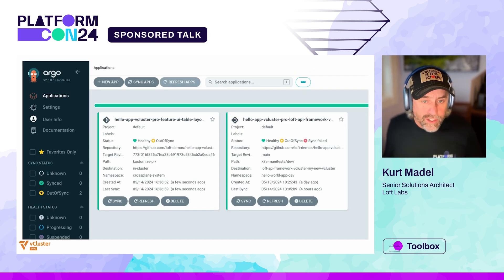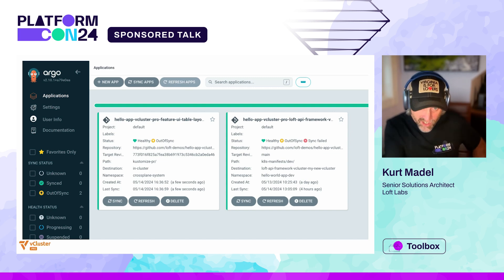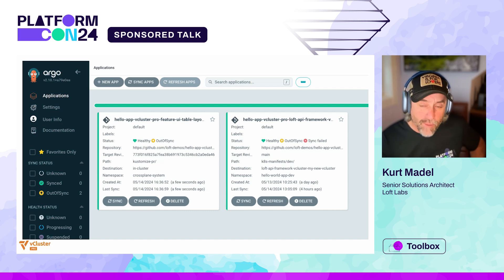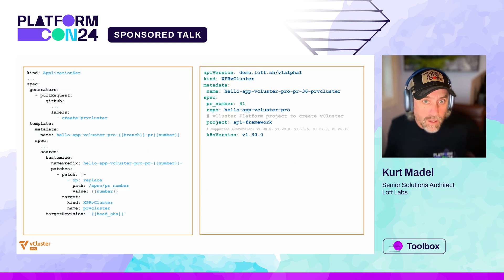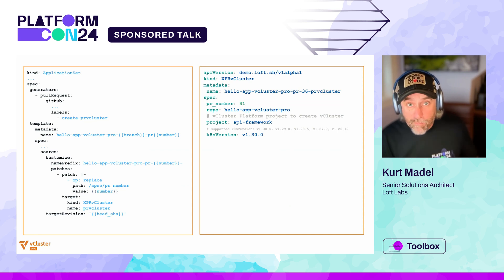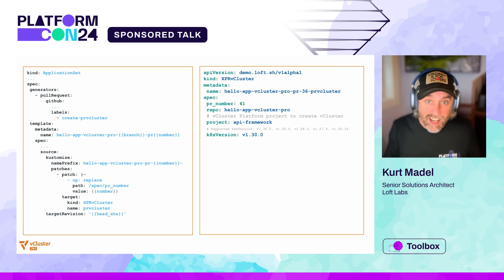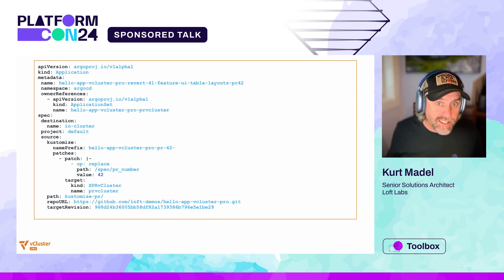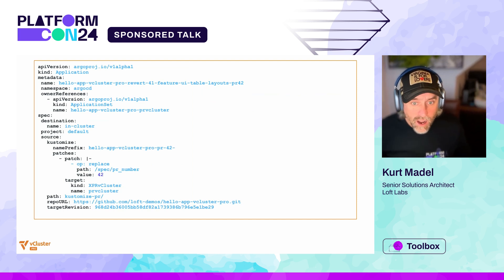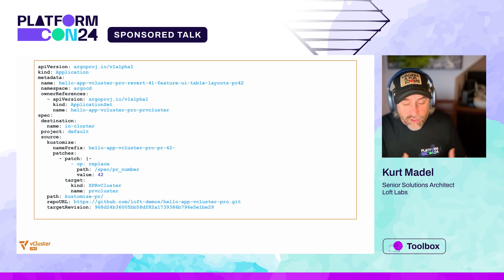Once we create that pull request, we're going to trigger a job to generate the application set. We'll generate that application resource that will trigger the deployment of that Crossplane composite resource to the management cluster. Here you can see the triggered application set generates an Argo CD application that in turn modifies the PR vCluster Crossplane composite resource with a name prefix and by injecting the GitHub pull request number. Next, we see the actual generated application — you see the pull request number there and the name prefix. This information will then be passed on to the virtual cluster template to configure everything downstream.